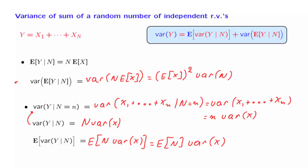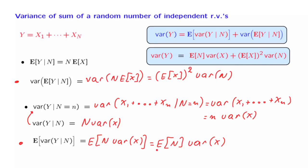Now that we have calculated both terms that go into the law of total variance, we can add these two terms. We have one contribution from here, this is this term, and another contribution from here, which is this term.